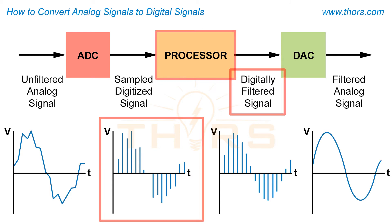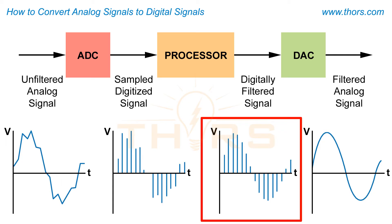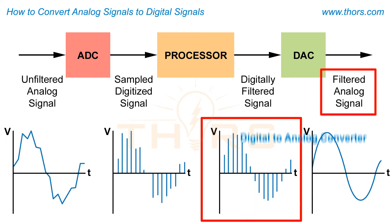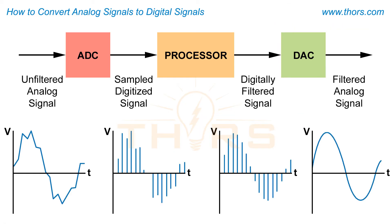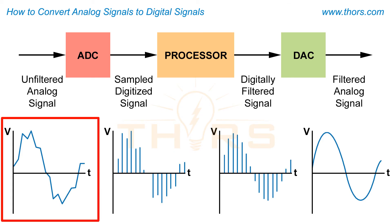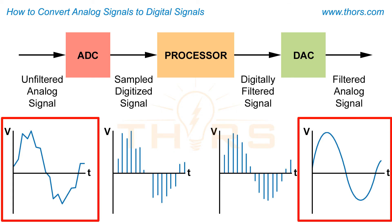Finally, the digital signal will be reverted back to an analog signal using a digital to analog converter or DAC. The DAC will reproduce the original analog signal, but the new analog signal will be filtered, which reduces the electrical noise and makes the signal easier to interpret.